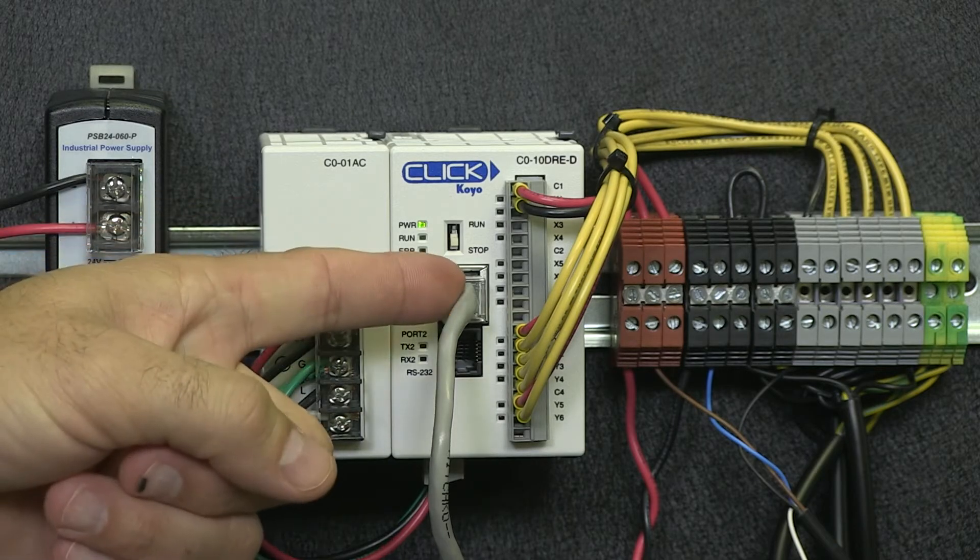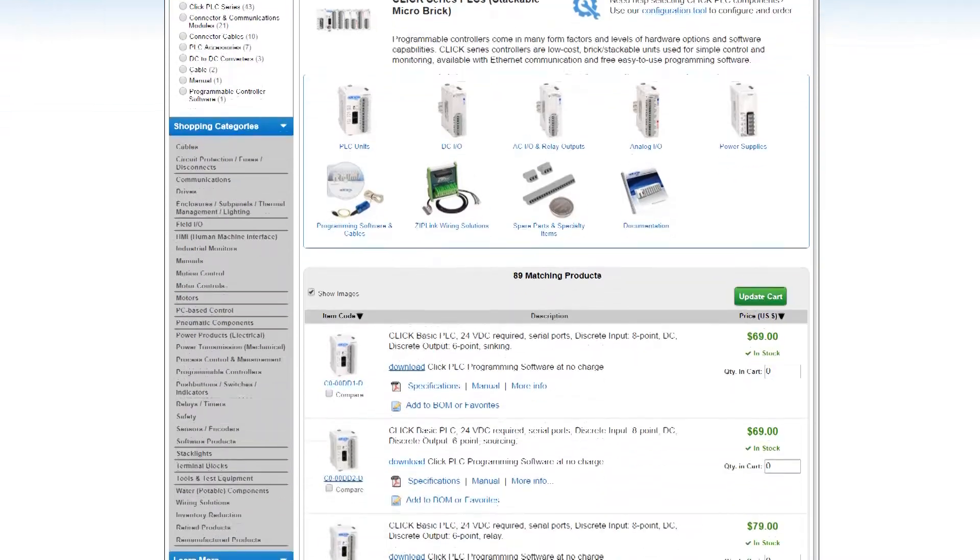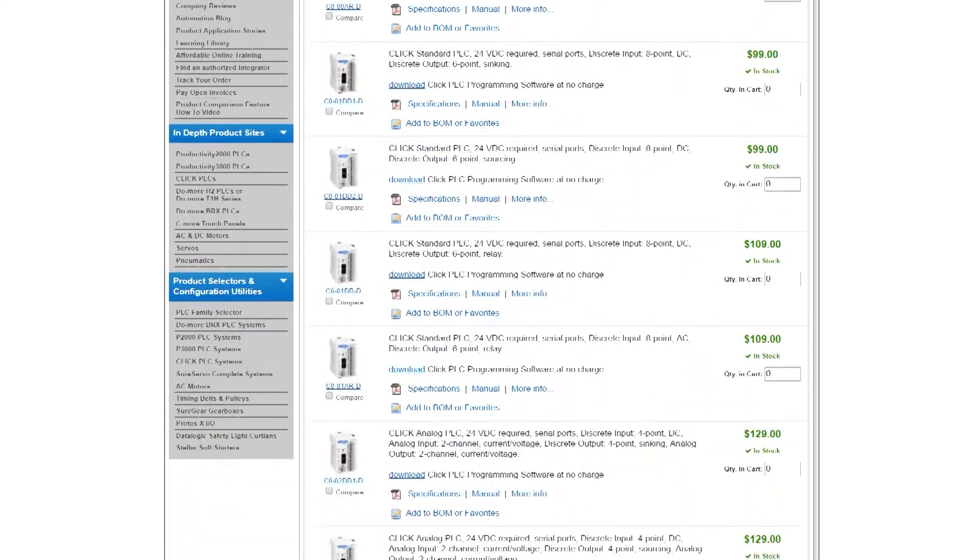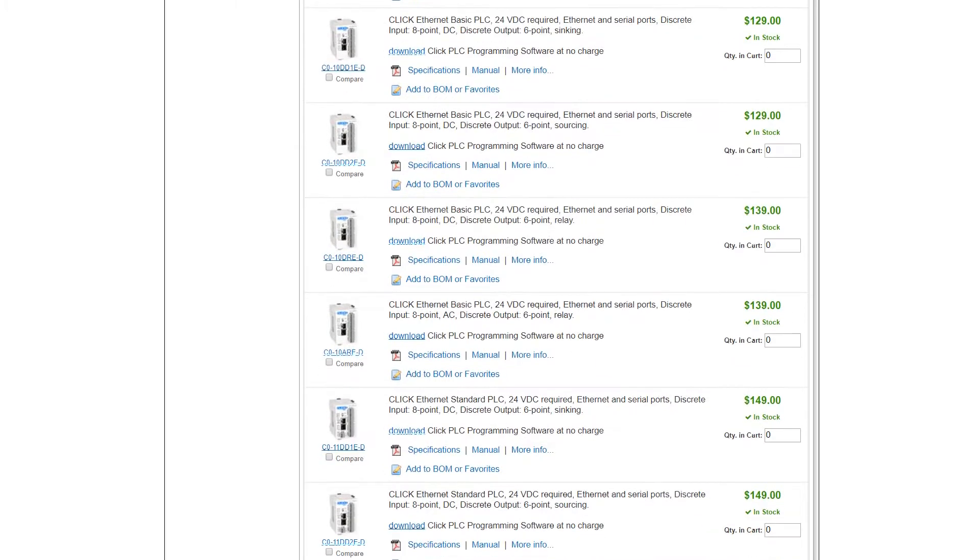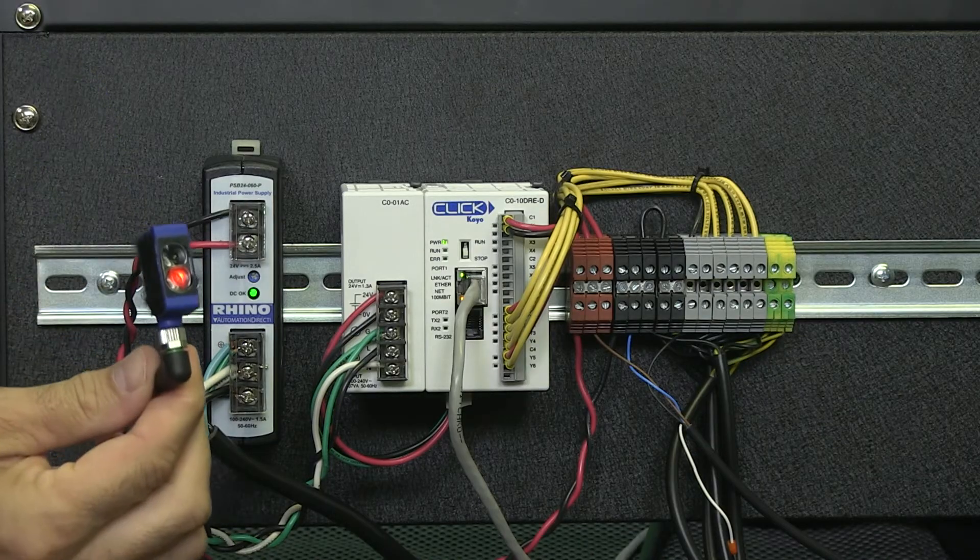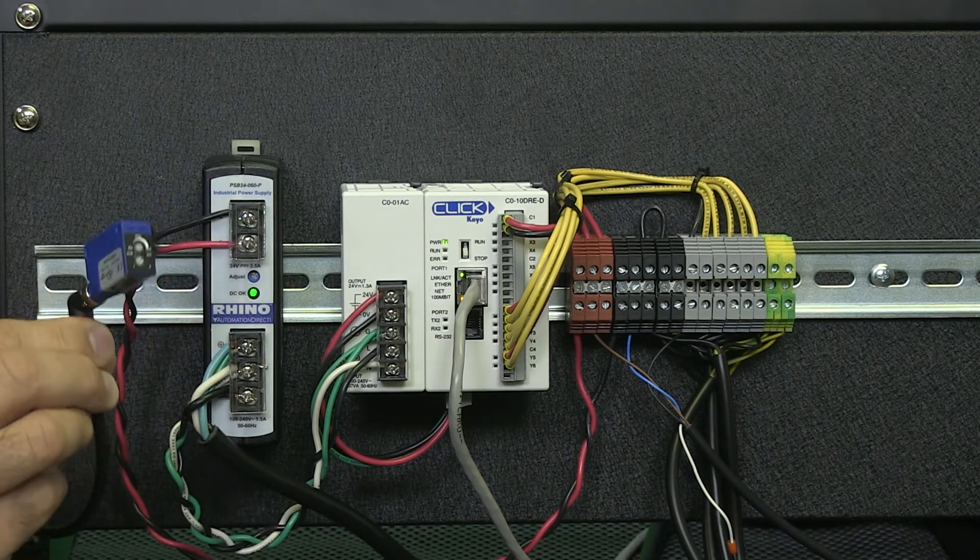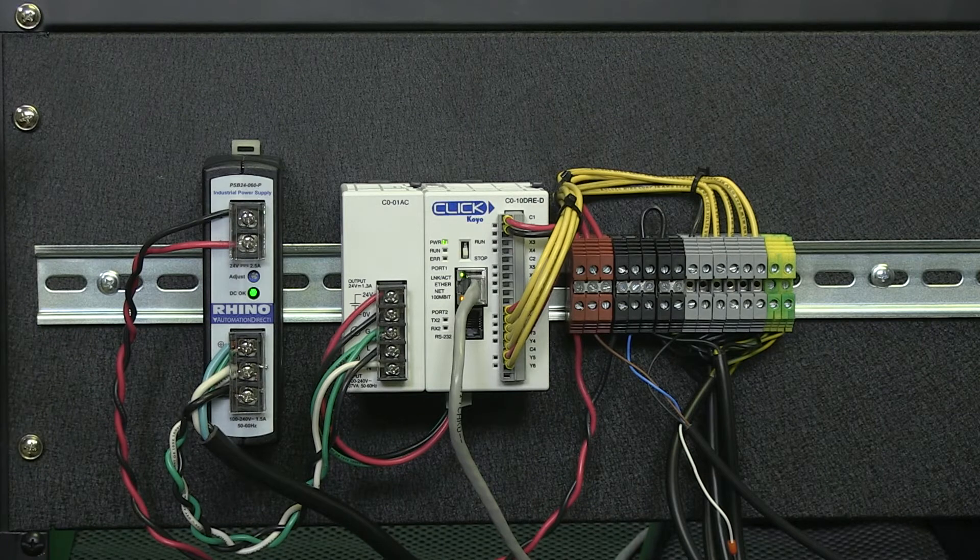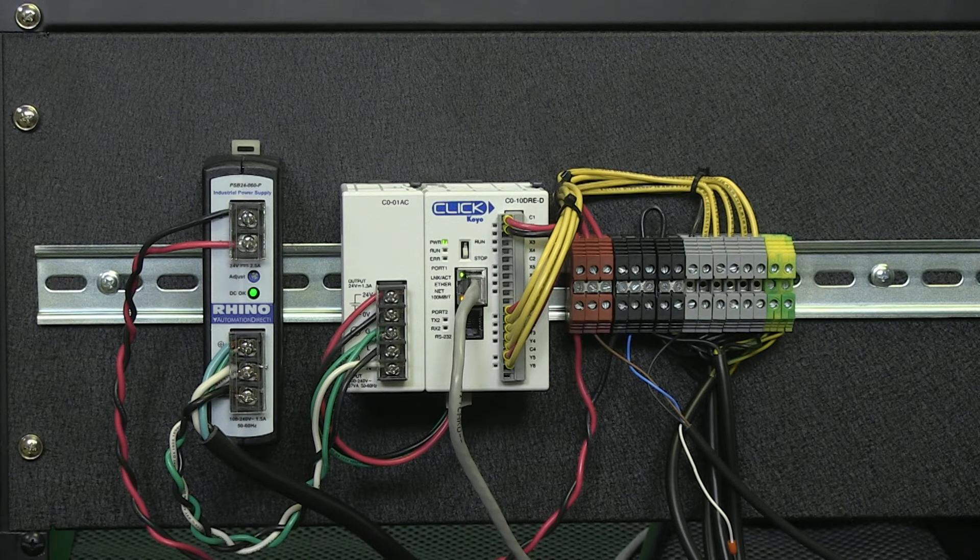I have a Click PLC with built-in Ethernet, DC inputs and relay outputs shown here. There are several models with DC, AC, or relay outputs. It all depends on what you have connected to the PLC. All I have is a DC sensor for input and four DC pneumatic valves. I could have used an all AC voltage system, but I chose to work with low voltage DC with this system.